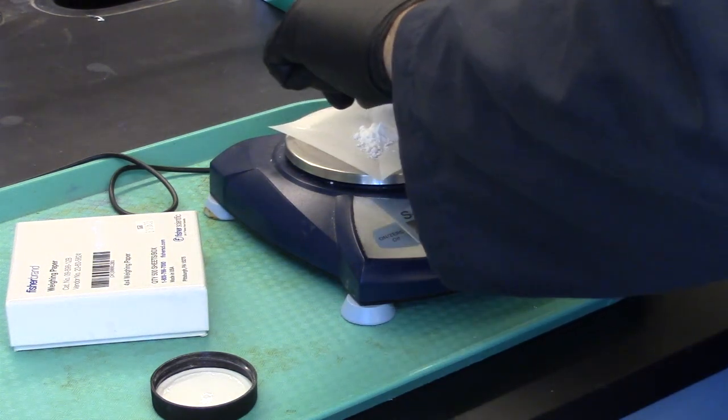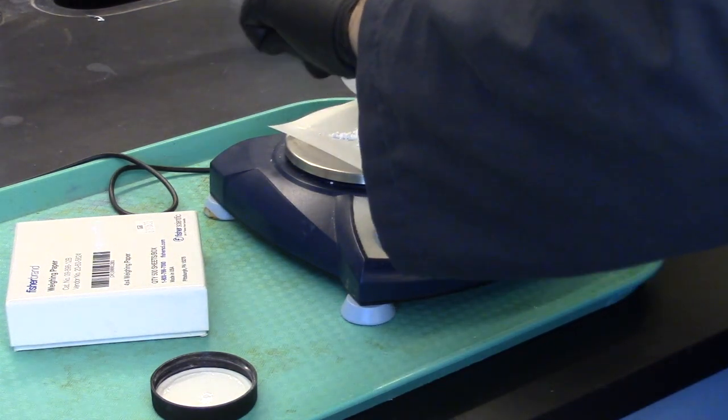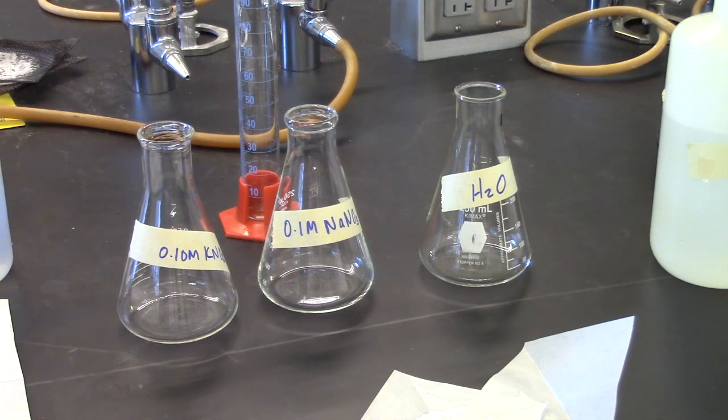You will label three Erlenmeyer flasks and three beakers as following: 0.1 molar potassium nitrate, 0.1 molar sodium nitrate, and water.